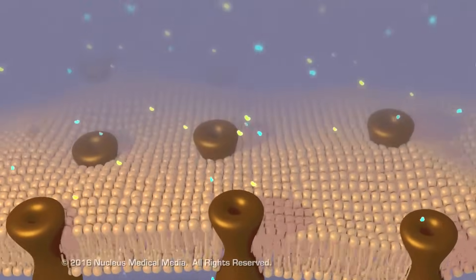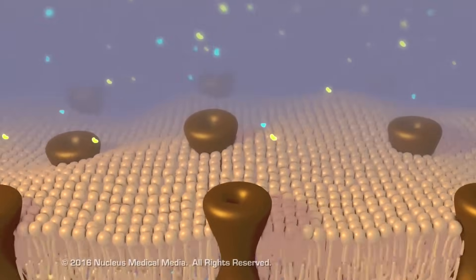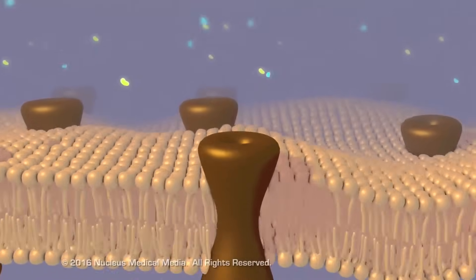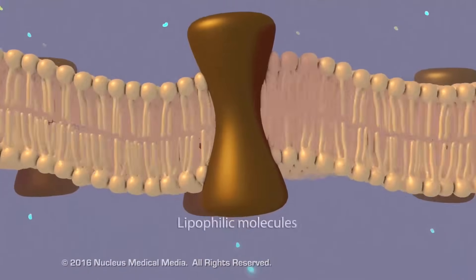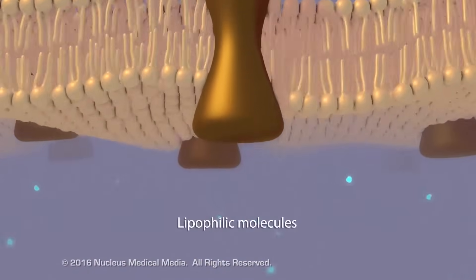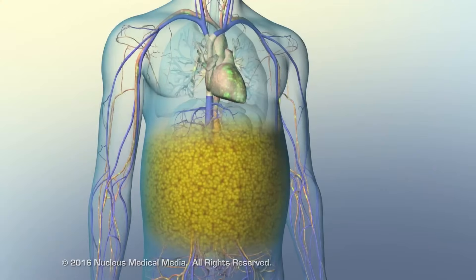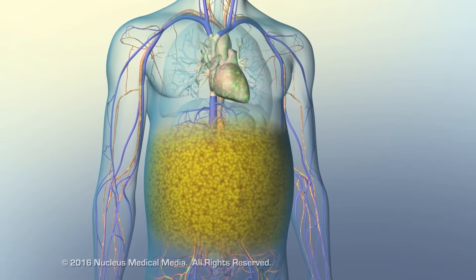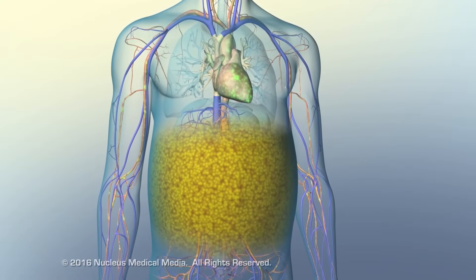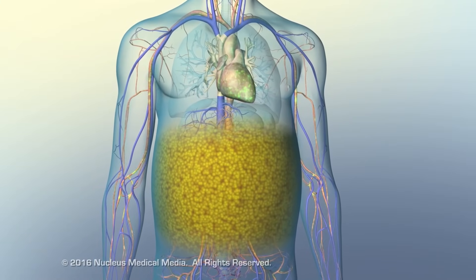Fat-soluble molecules cross cell membranes faster than water-soluble molecules due to the lipophilic nature and phospholipid composition of the cellular membrane. Factors such as body fat percentage and disease also affect medication distribution.